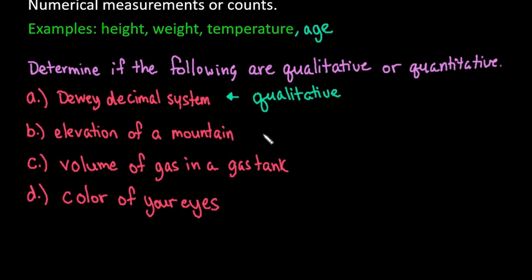The next one we have is elevation. The elevation of a mountain is a measurement, so this would be quantitative. You could actually figure out how far above sea level something is, so this would be quantitative.